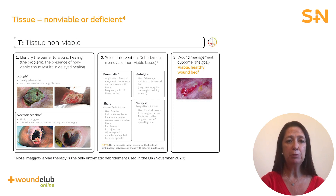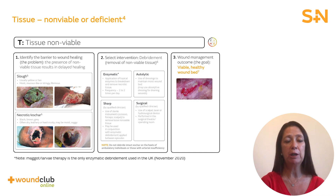Debridement is the process of removing devitalised tissue and or foreign material from a wound, and it may occur naturally. However, in some cases the patient may have an underlying pathology which affects the ability of the body to naturally debride the wound. The next set of presentations in this series of modules will focus more in depth on tissue.